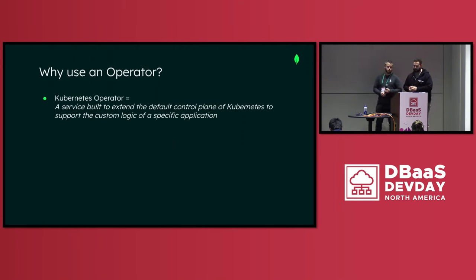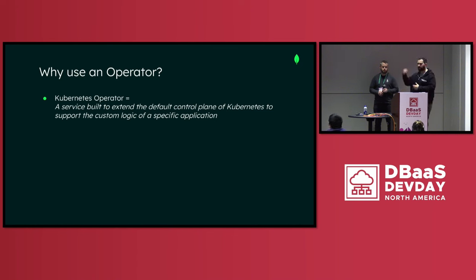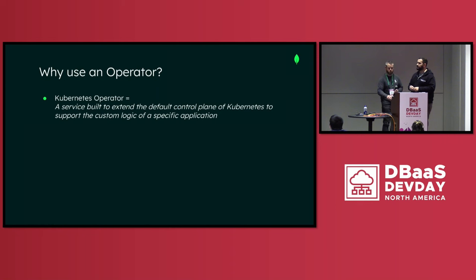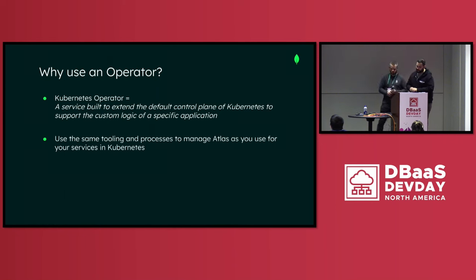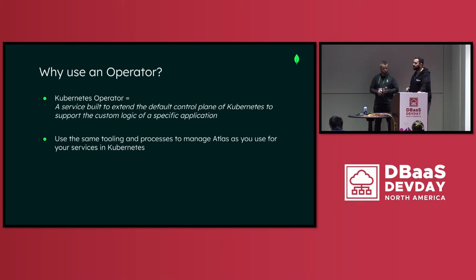A very quick introduction to what the Kubernetes operator is: it's a service designed to extend the default control plane of Kubernetes to support custom logic and custom operation of a specific application — in this case, an external application, namely Atlas. Using the operator allowed Jack and Jill's company to use the same tooling and processes to manage their databases as they already used for applications running in Kubernetes. Atlas databases run in one of the three major cloud providers, but with the operator managing configuration running in Kubernetes clusters, it allows users to configure databases with configuration files that can be managed in a repository agnostically of where the database is running.